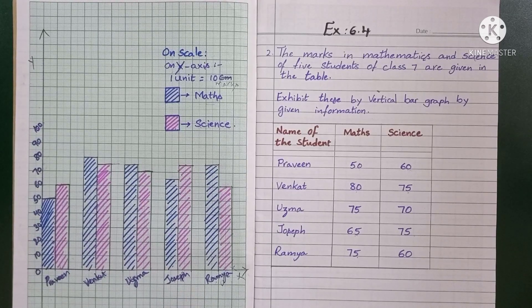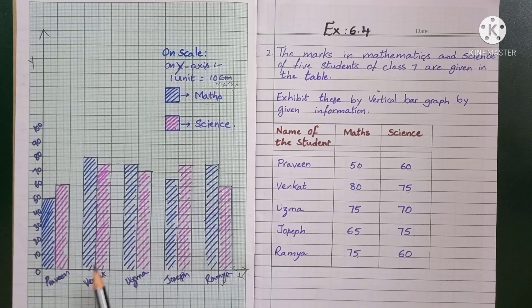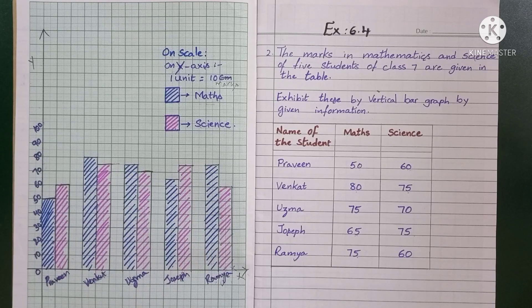Understood, children. It was explained in detail clearly. Revise it once more so you can draw any graph easily. Let's move on to the next question, question number 3.